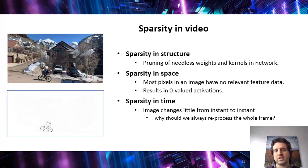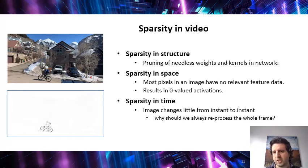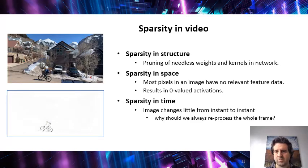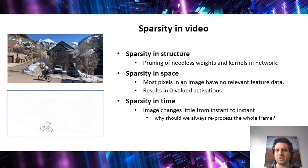So what we see here is that there are several forms of sparsity — data that is not meaningful. We have sparsity in structure, which is the part of the neural network that processes the image itself — you can prune many weights and kernels that are actually not used in the network. But you also have other types of sparsity. You have sparsity in space, which is that there are many areas on your image that have no relevant feature data, even when that data is changing. This normally results in zero valid activations on your neural network.